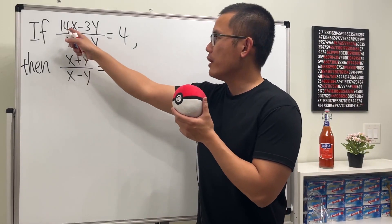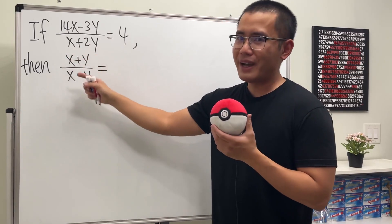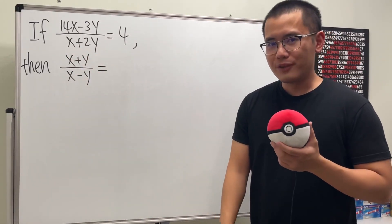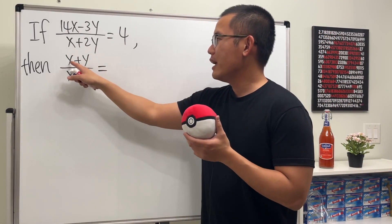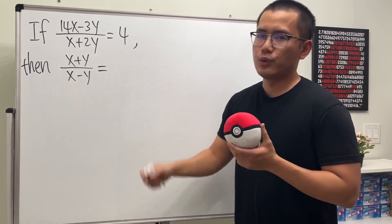Suppose we know 14x minus 3y over x plus 2y equals 4. And we are going to find out the expression x plus y over x minus y is equal to what?